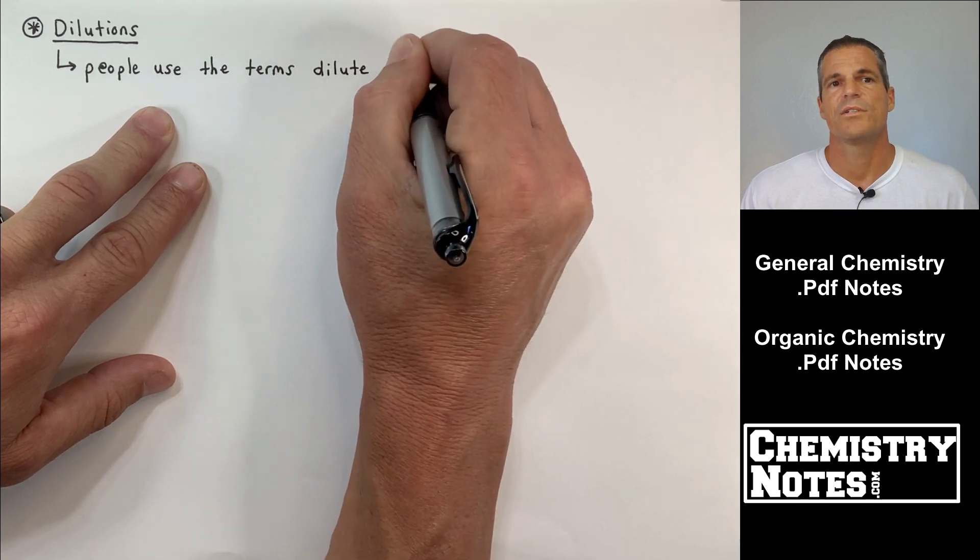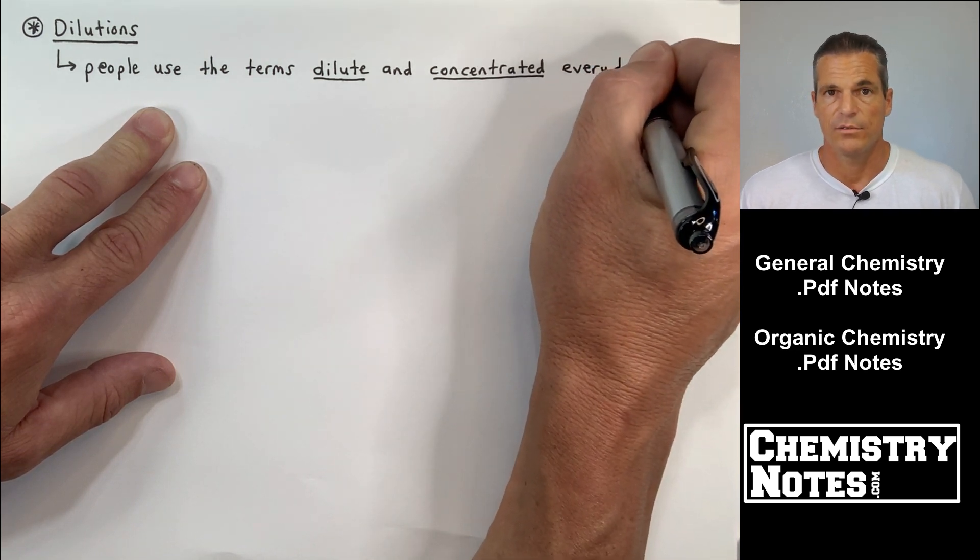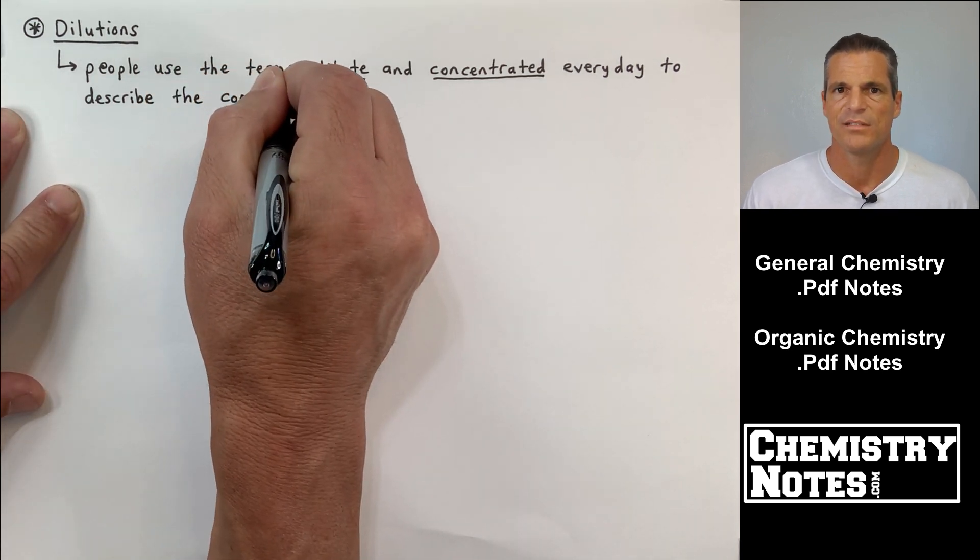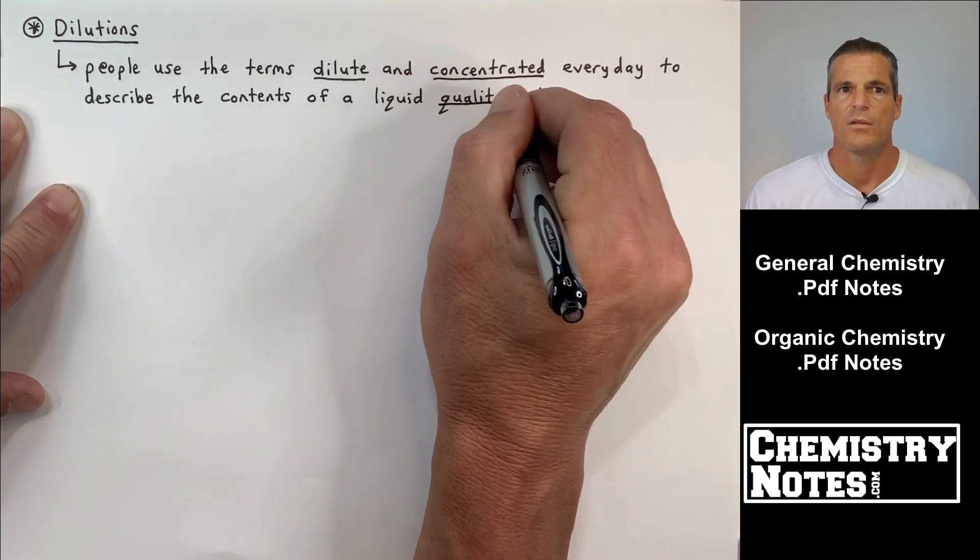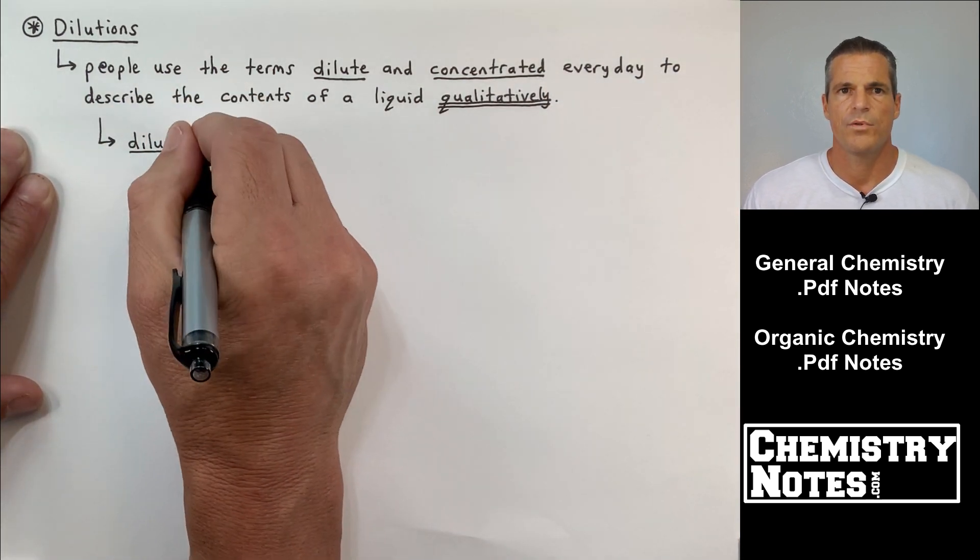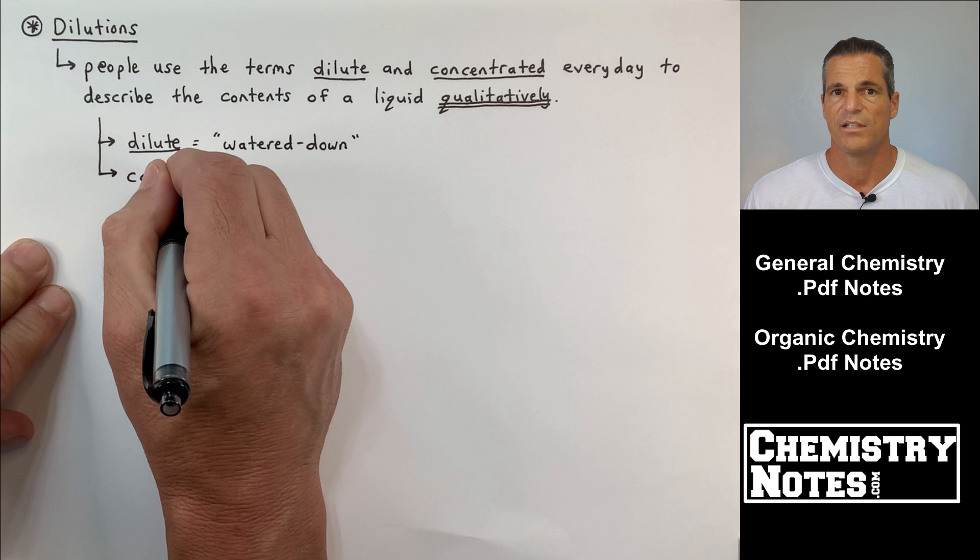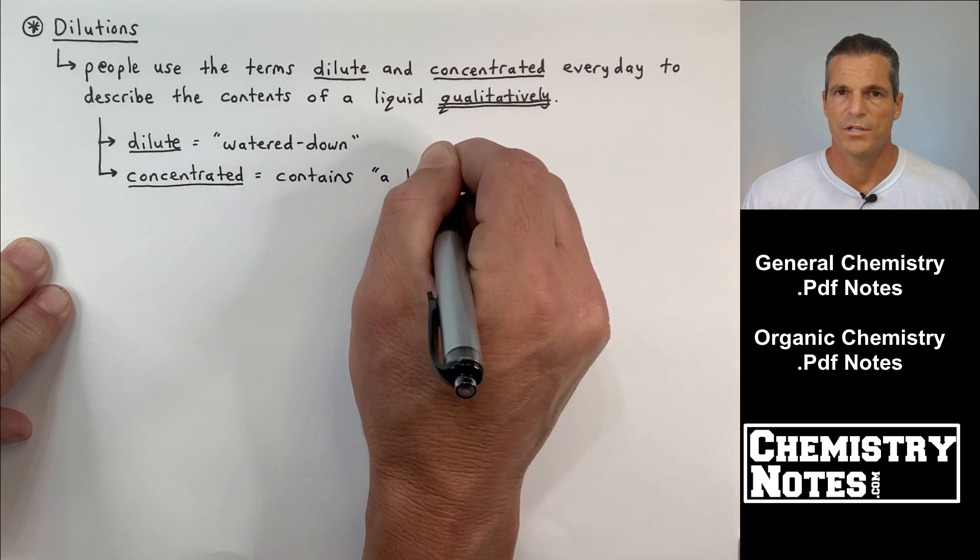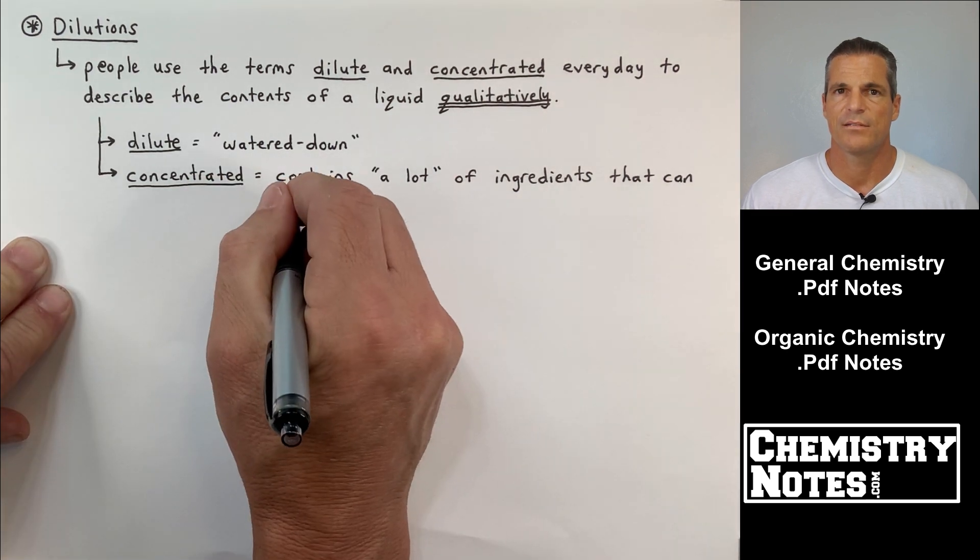Dilutions. Well, people use very qualitative terms like, oh, that's very dilute, it's very watery, very dilute, or very concentrated means it's very heavy. You really taste the substance inside. These are just qualitative terms. So, we can get very specific or quantitative in chemistry. It says people use the terms dilute and concentrated every day to describe the contents of a liquid qualitatively. Dilute is like saying something is watered down.